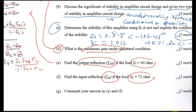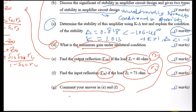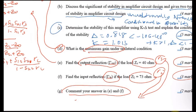Each of those sub-questions gives three marks. Finally, comment on your answers in E and F — look at the values of gamma_S and gamma_L and compare them to the maximum gain condition. If they are not the same as the conjugate match values, the gain you calculated is lower than the maximum gain, meaning it is a specified gain rather than the maximum.